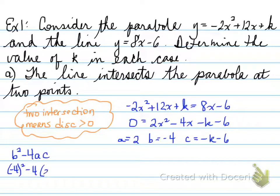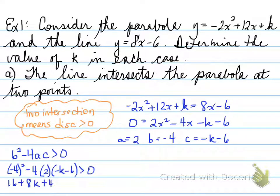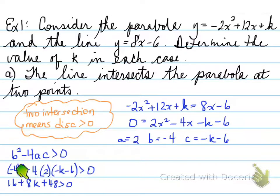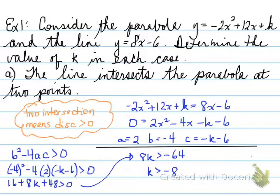We plug the values into the formula b squared minus 4ac. Since the discriminant must be greater than 0, we set b squared minus 4ac greater than 0. After expanding and collecting like terms, make sure the variable is positive — if it's negative, move it to the other side. We get 8k greater than negative 64, so k is greater than negative 8.